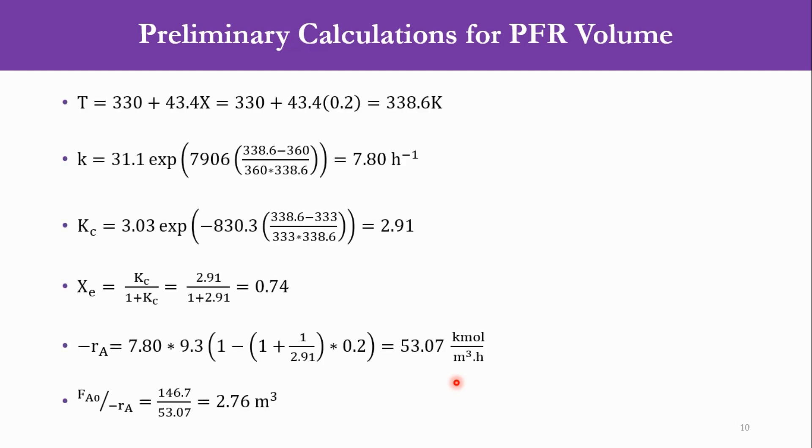Let us go to the next part, which is the preliminary calculations. For example, we say that X equals 0.2, because if you remember, we have to plot as well and we have to find the value at 0.7 as well. So the first part is plotting. So let us say that X equals 0.2. Once we put the value of X equals 0.2, we get the answer as 338.6 Kelvin. Now the temperature is known, we put the value in K and Kc expressions to get the answer as 7.8 per hour for K and for Kc is 2.91. Now we know the value of Kc, so we can get the value of Xe which equals Kc over 1 plus Kc, and accordingly the equilibrium conversion is 74 percent or 0.74.